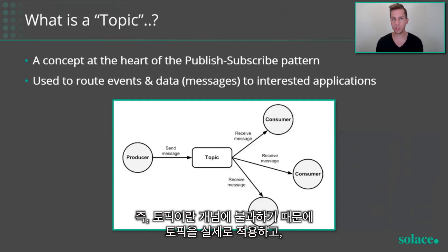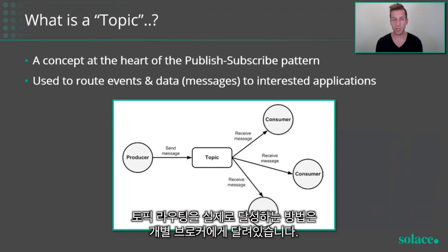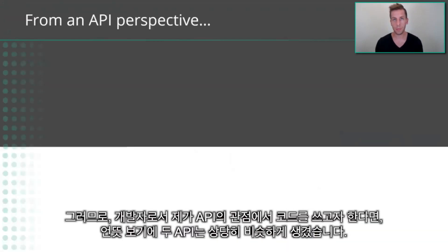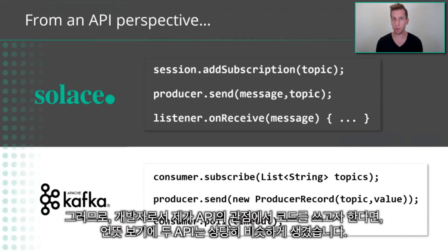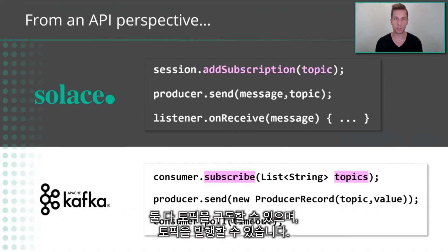This promotes a loosely coupled architecture and gives a scalable one-to-many style of communication. Since topics are just concepts, how the topics are actually implemented and how topic routing is achieved is left up to the specific broker. From an API perspective, as a developer, at first glance, both these APIs look fairly similar. Both can subscribe to a topic, both can publish to a topic.